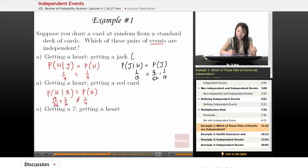So here, I'd say independent. Here, not independent. And remember, you could always test it the other way as well. Probability of red given heart. Does that equal the probability of getting a red card? Okay.